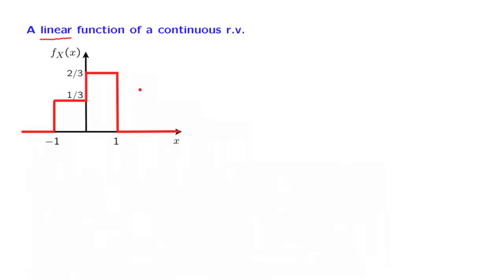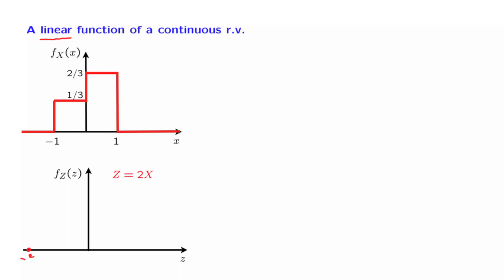We start with a random variable x that has a PDF of the form shown in this figure, so that it is a piecewise constant PDF. We then consider a random variable z, which is defined to be 2 times x. The random variable x takes values between minus 1 and 1, so z takes values between minus 2 and 2. Values of x between minus 1 and 0 correspond to values of z between minus 2 and 0. The different values of x in this range are, in some sense, equally likely because we have a constant PDF, and that argues that the corresponding values of z should also be equally likely. So the PDF should be constant over this range.